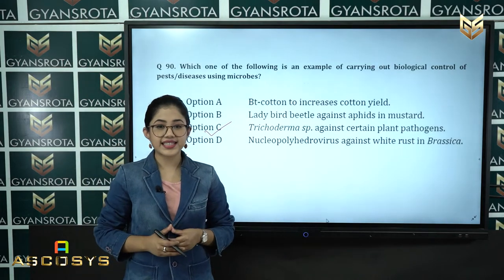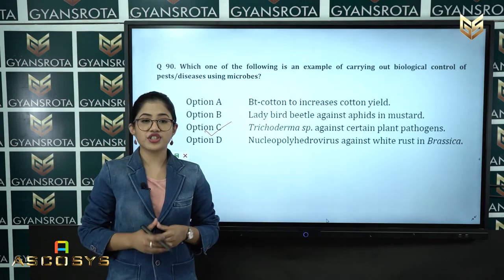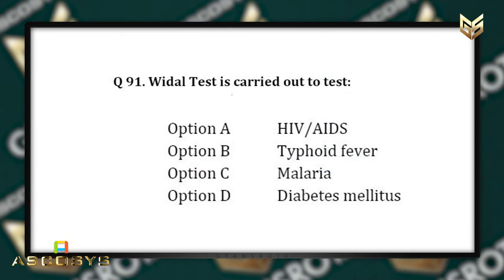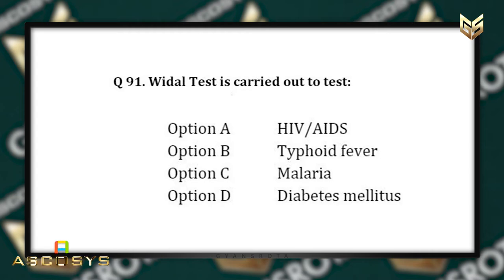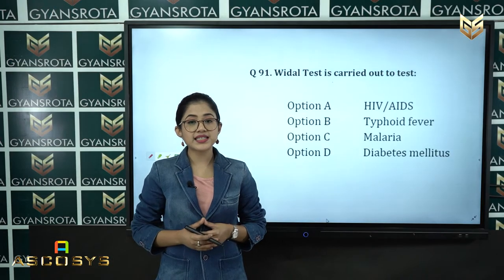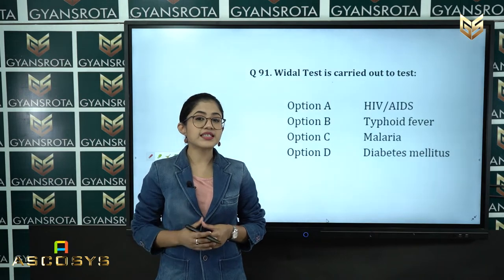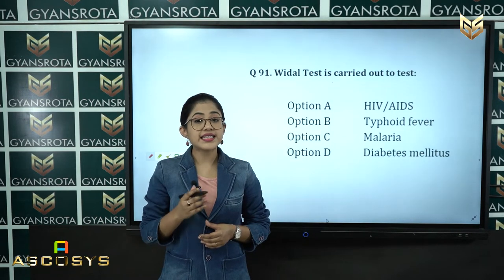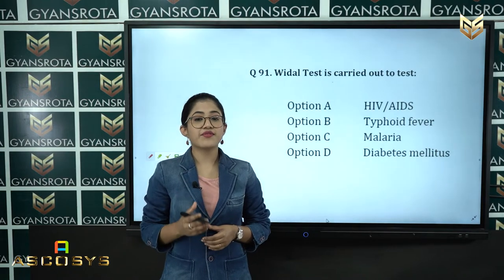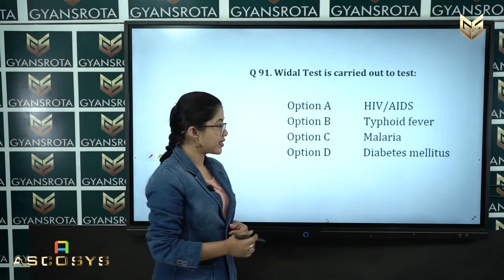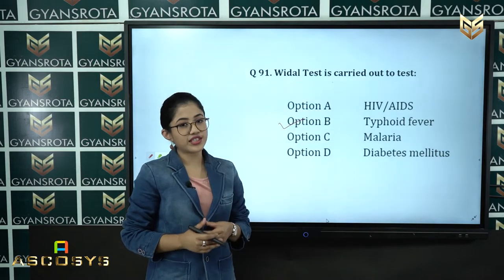Question number 91: Widal test is carried out to test — Option A: HIV/AIDS, Option B: typhoid fever, Option C: malaria, Option D: diabetes mellitus. Widal test is carried out to test typhoid fever, so option B is the correct answer.